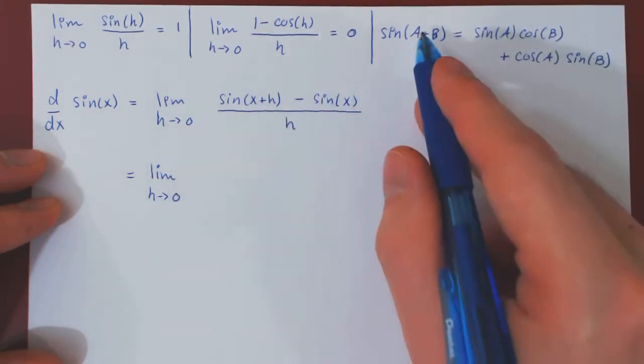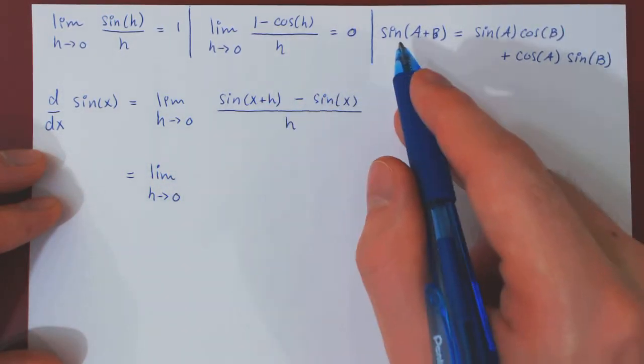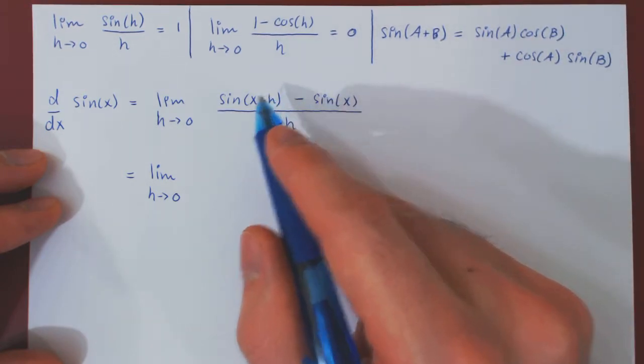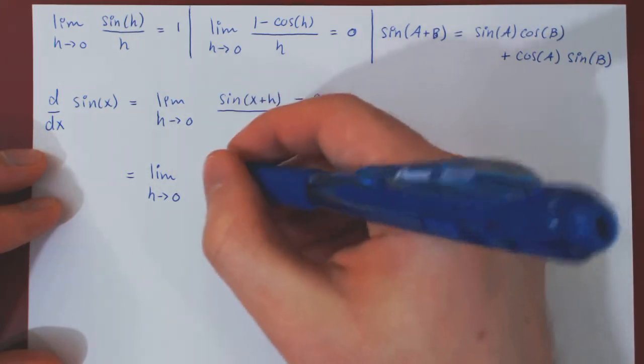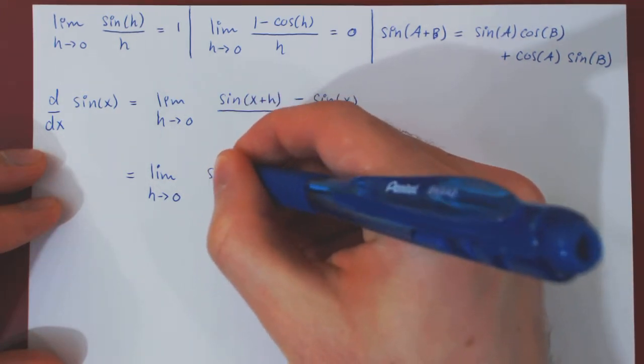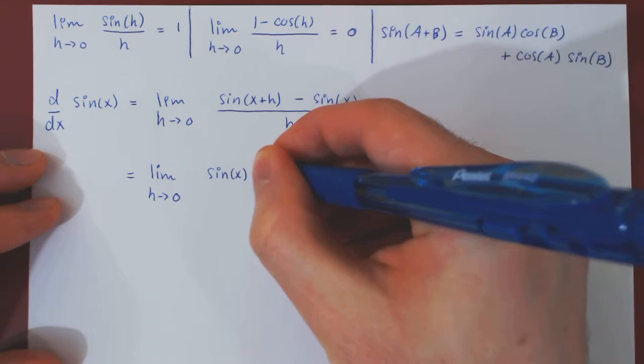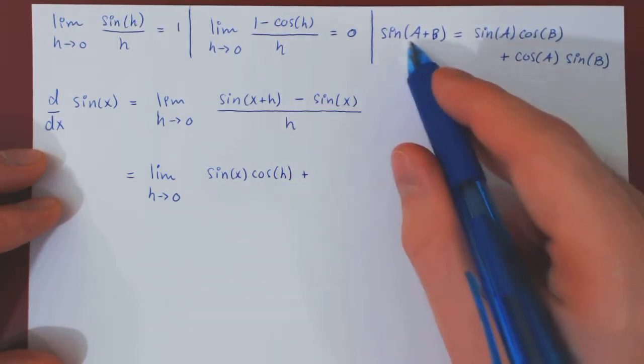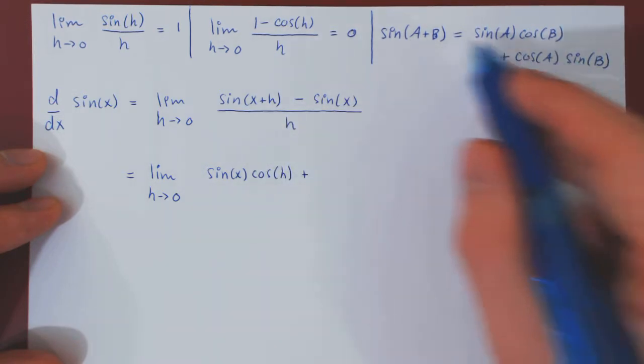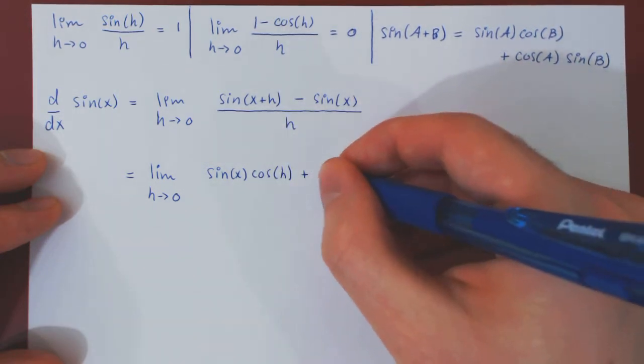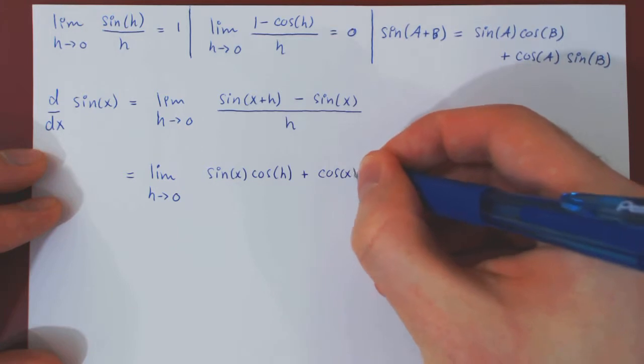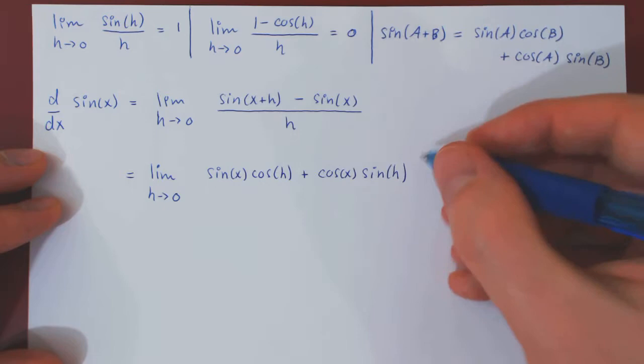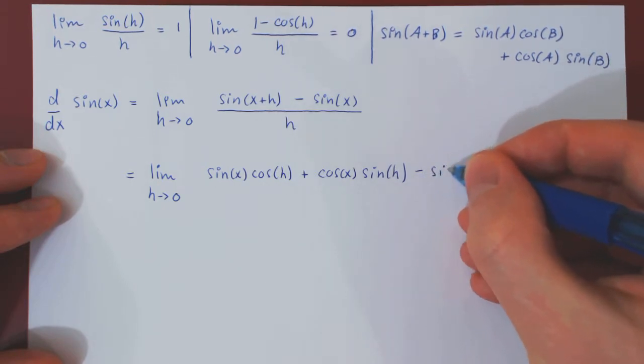So, we have sin of x plus h, so here x is, or a is x, and b is h. So, this will give us sin of x cos of h plus, now, cos of x sin of h. Of course, minus sin of x over h, everything else is the same.